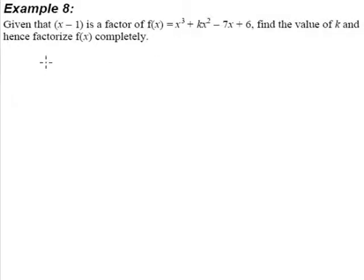So we know that x minus 1 is a factor of this function. Therefore, if we substitute in x equals to 1 into the function, you will get 0 because the remainder is 0.